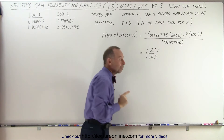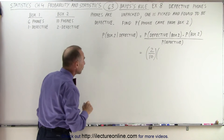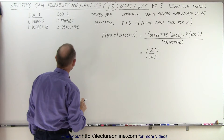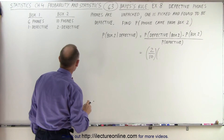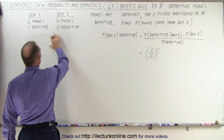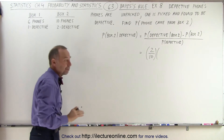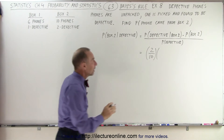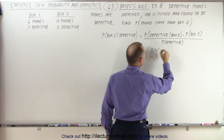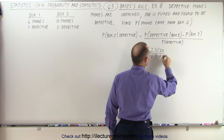Now, what is the probability the phone came from box two? We had a total of sixteen phones and ten phones came from box two, so that probability is ten out of sixteen.